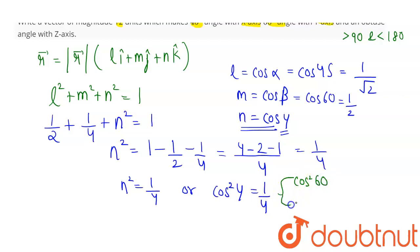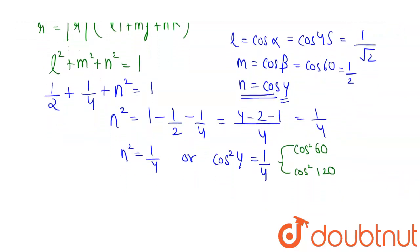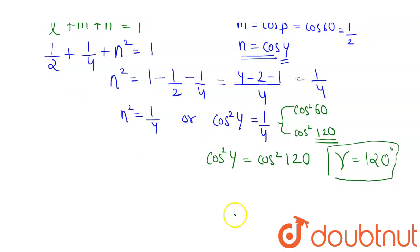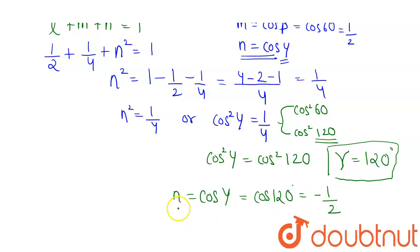So cos²γ = 1/4 corresponds to either cos²60° or cos²120°. Since the question specifies that γ must be an obtuse angle — greater than 90° and less than 180° — we select γ = 120°. Therefore n = cos γ = cos 120° = −1/2.